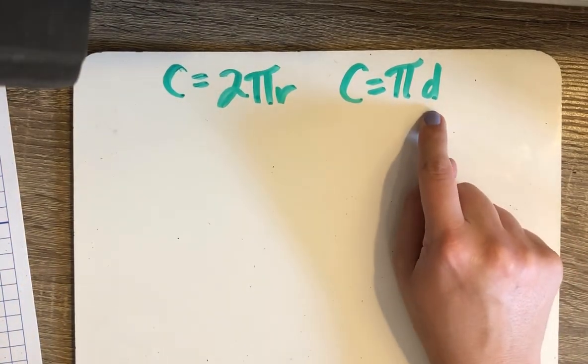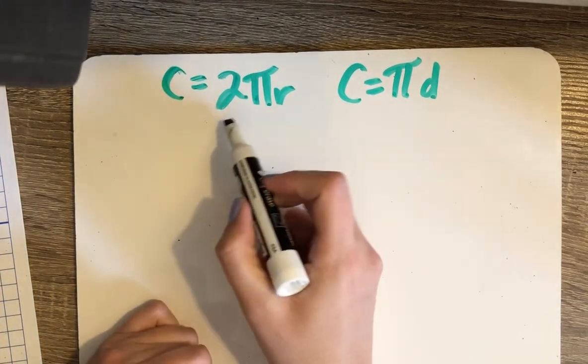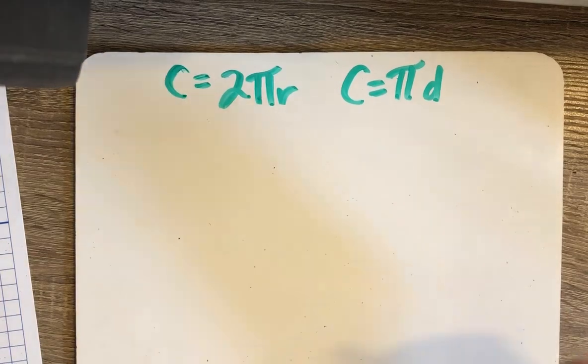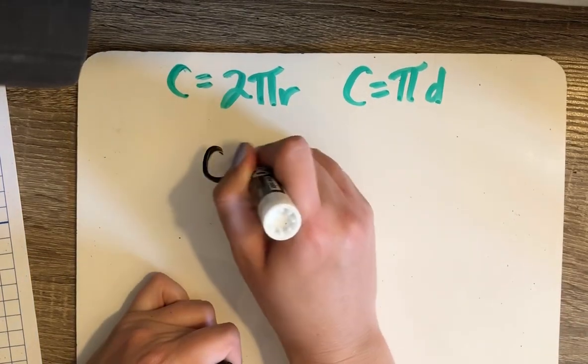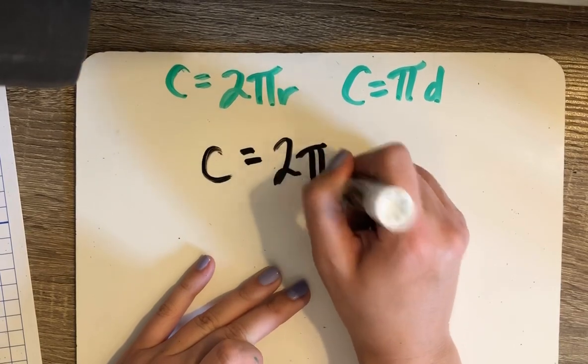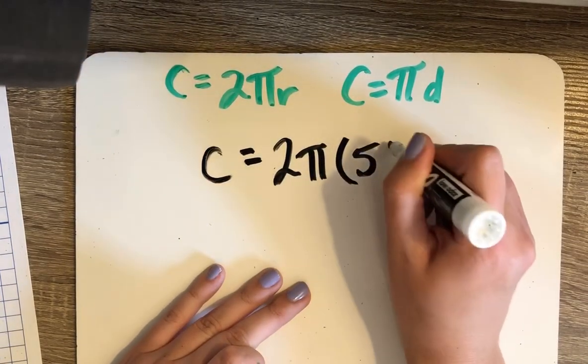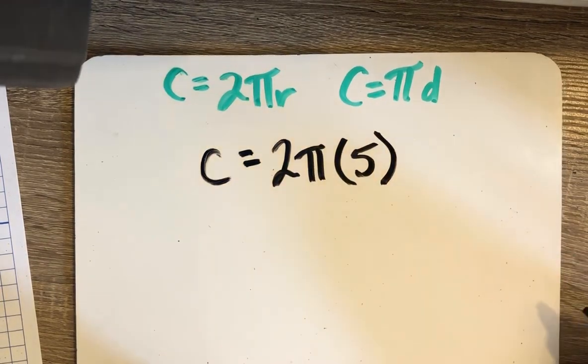Now the diameter is just 2 times the radius, so this 2r is equal to d. That's why these are interchangeably used. Let's use the formula that has r in it since that's what we've already determined. So the circumference will be 2π, and then I'm substituting in our radius 5 for r.